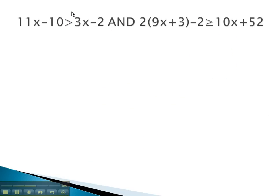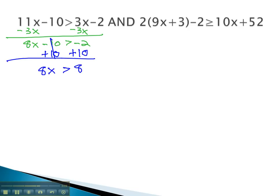In this problem, we must start by getting the variables on the same side by subtracting 3x from both. We get 8x minus 10 is greater than negative 2. Next, we can add 10 to both sides to get 8x is greater than 8. Finally, dividing both sides by 8, we end up with x is greater than 1.